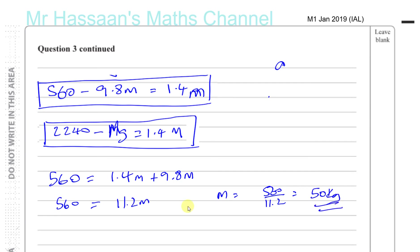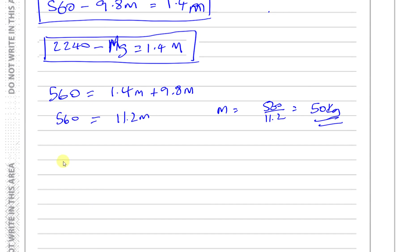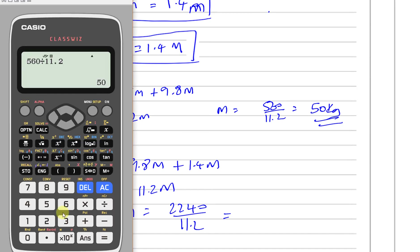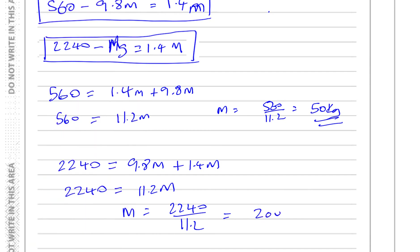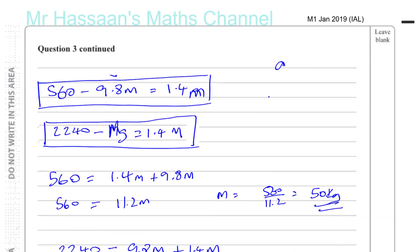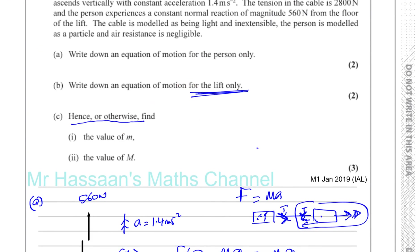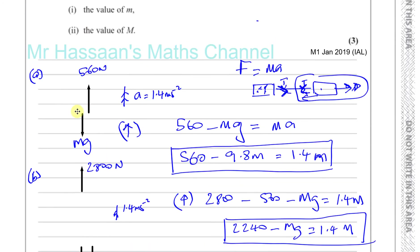For the mass of the lift, using the second equation: 2240 equals 9.8M plus 1.4M, so 2240 equals 11.2M. Therefore big M equals 2240 divided by 11.2, which gives 200 kilograms. And there we have our answers. Many people will take the force acting on the whole system rather than just on the lift alone, so be very careful about that.